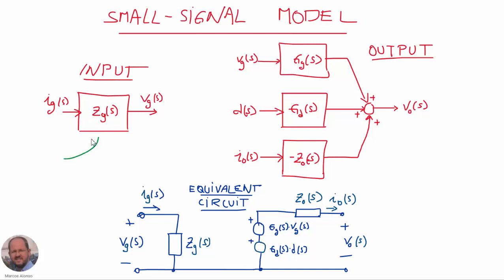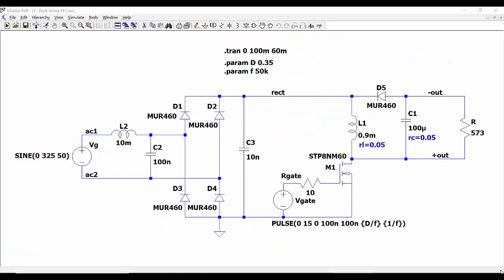We can finally get the small-signal model of our converter expressed in two ways: one describing the behavior at the input of the converter, and one describing the behavior of the output voltage when injecting perturbations on the peak line voltage, the duty cycle, or the output current. Another way to represent the behavior of our PFC converter is with an equivalent circuit showing the input impedance, the output voltage sources depending on the duty cycle and peak line voltage, and including the output impedance of the converter.